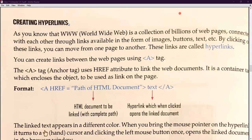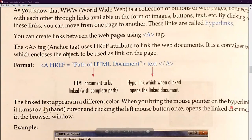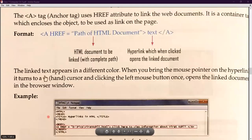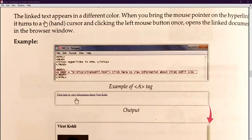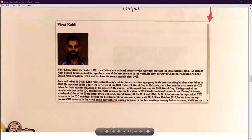The linked text appears in a different color. When you bring the mouse pointer on the hyperlink it turns to a hand cursor, and clicking the left mouse button opens the linked document in the browser. When you create a hyperlink and hover the mouse over it, the mouse pointer turns into a hand cursor. Here is an example: inside the body tag we write the anchor tag with href pointing to an HTML file, and the visible text says 'click here to view information about Virat Kohli.' When you click that text you will see the output — the image and details about that player.